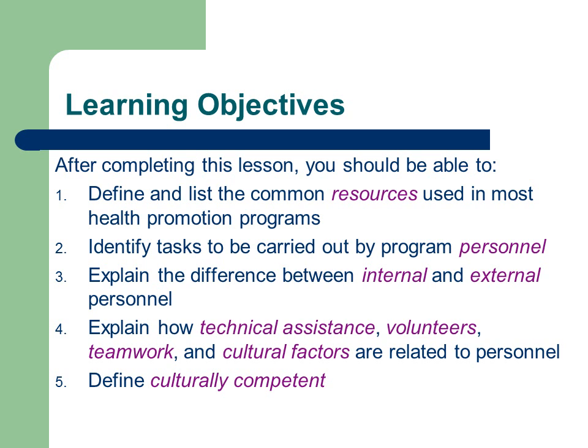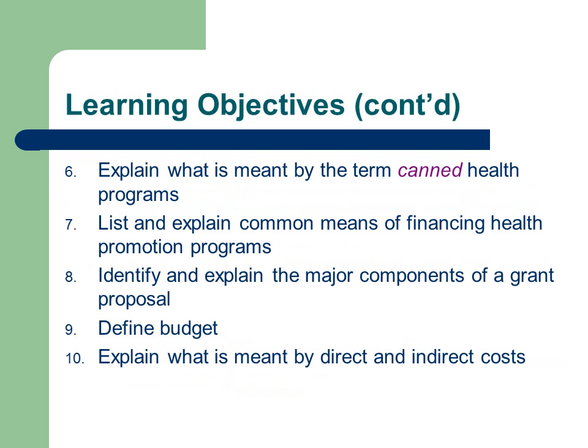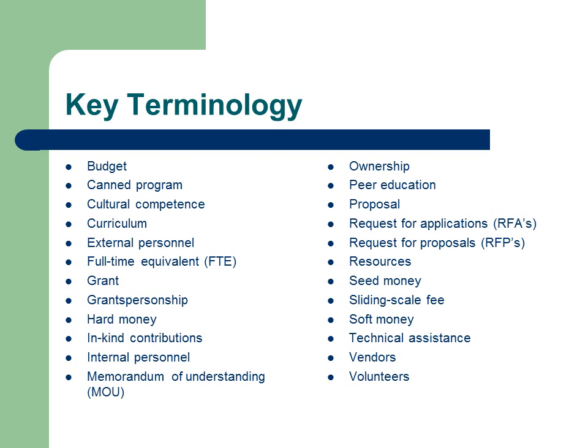There are two pages of learning objectives, which should give you an idea that there's a lot of content here. I've got some terms highlighted in purple — these are things I want you to keep an eye out for. There's the learning objectives, page one and page two, and then some key terminology: budget, canned program, cultural competence, and so on. Be on the lookout for those as we go through the lecture and as you do the reading for this week.